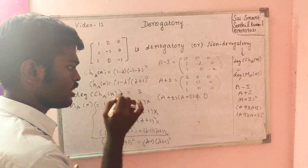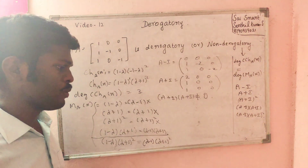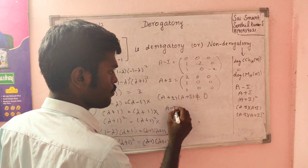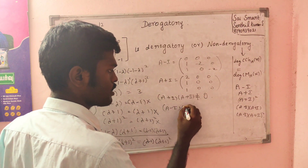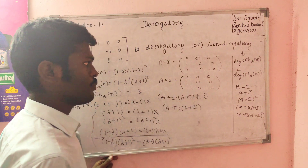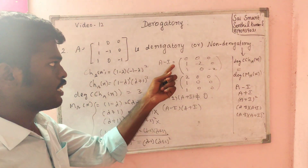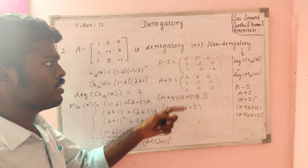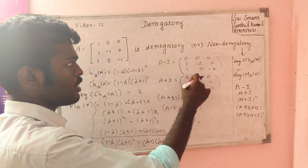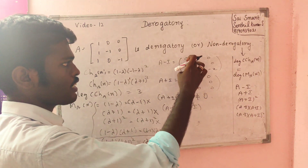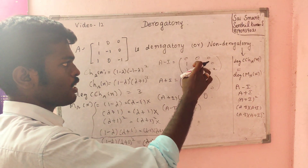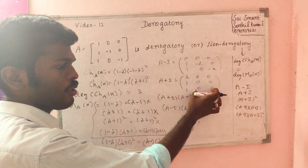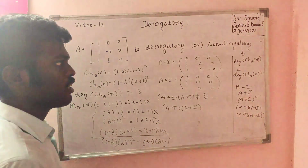We check: (A minus I)(A plus I) squared equals 0. After computing the product, A minus I times A plus I gives zero matrix, so we verify which minimum polynomial candidate satisfies the condition.